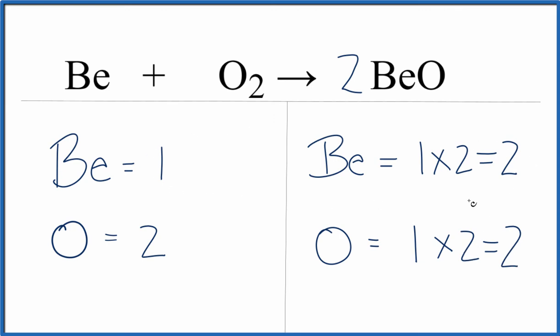Now the berylliums need fixed. We have two here and one here, and we can just put a two in front of this beryllium atom, this Be. One times two, that equals two. And now everything is the same on both sides of the equation.